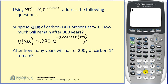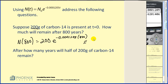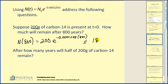We need to be a little careful when we type this in: 200 times e to the power of negative 0.00012205 times 800. The result is approximately 181.62 grams. With such a small decay rate, after 800 years there is still a considerable amount remaining.